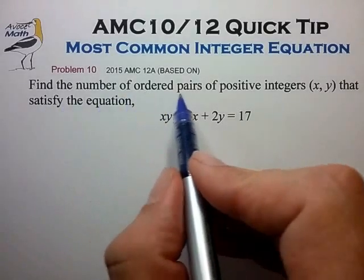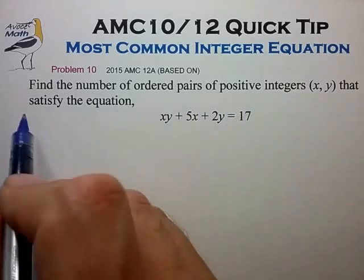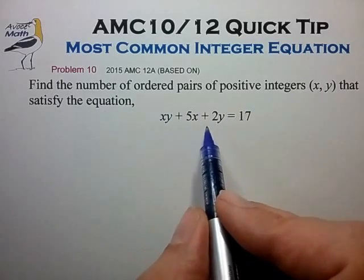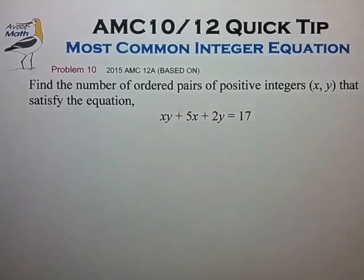Find the number of ordered pairs of positive integers (x, y) that satisfy the equation xy + 5x + 2y = 17.